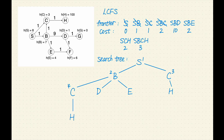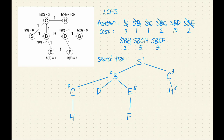Next, SbE and Sch both have the lowest cost of 2. E has one successor, F. Let's add SbEF to the frontier with a cost of 3. Next, Sch has the lowest cost of 2. Let's remove Sch from the frontier. H is not a goal, let's expand it. H has no successor. Let's keep going.